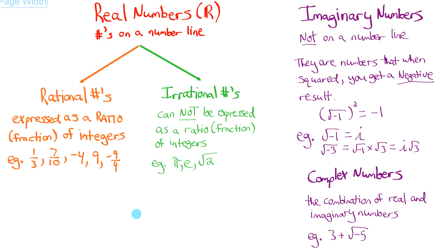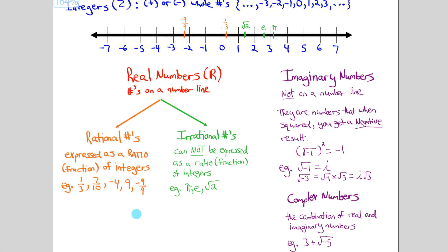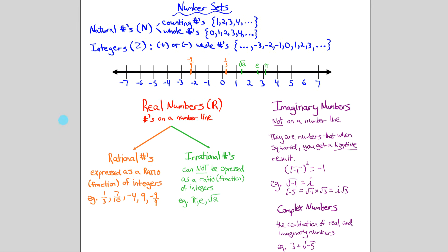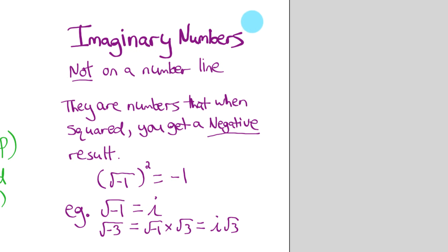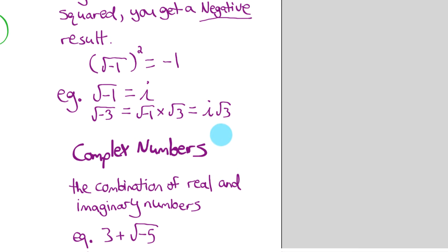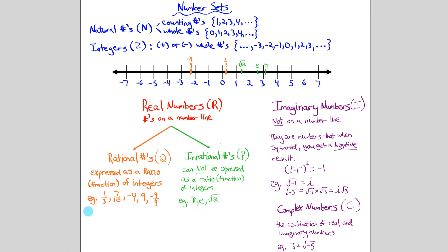Let me zoom out so you can see the whole breakdown of these number sets. The letter used for rational numbers is Q, for irrational numbers is P, for imaginary numbers is I, and for complex numbers is C. Take a good look at that breakdown and hopefully you now understand all the different sets of numbers and how they're related to each other.